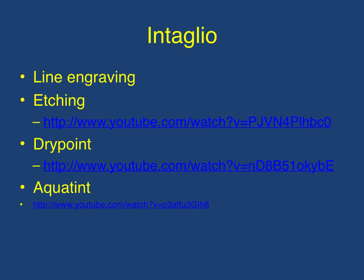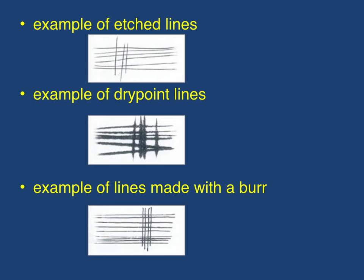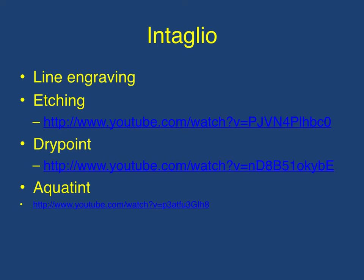Next we have dry point. In dry point the printmaker scratches the surface of a metal plate with a needle. This can leave behind a ridge or burr on either side of the groove. You can see clearly etched lines that are very clean and precise, while dry point examples can have much thicker, fuzzier lines. On the bottom you can see examples of lines made with a burr — what we call it when only one side of the groove has that fuzzier, softer feeling to it.